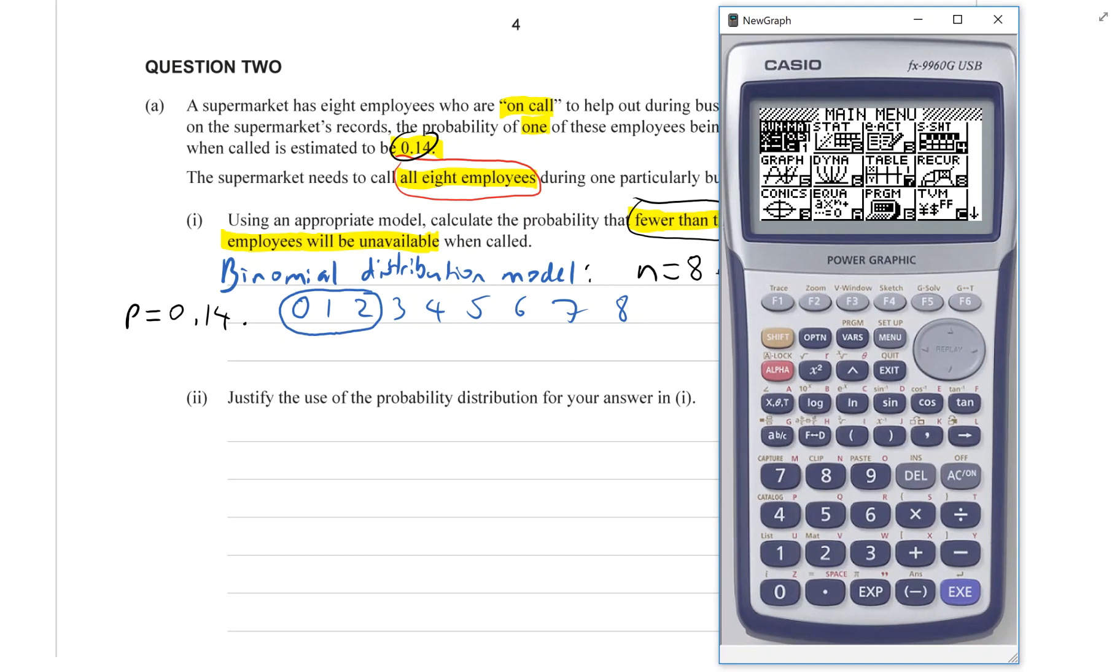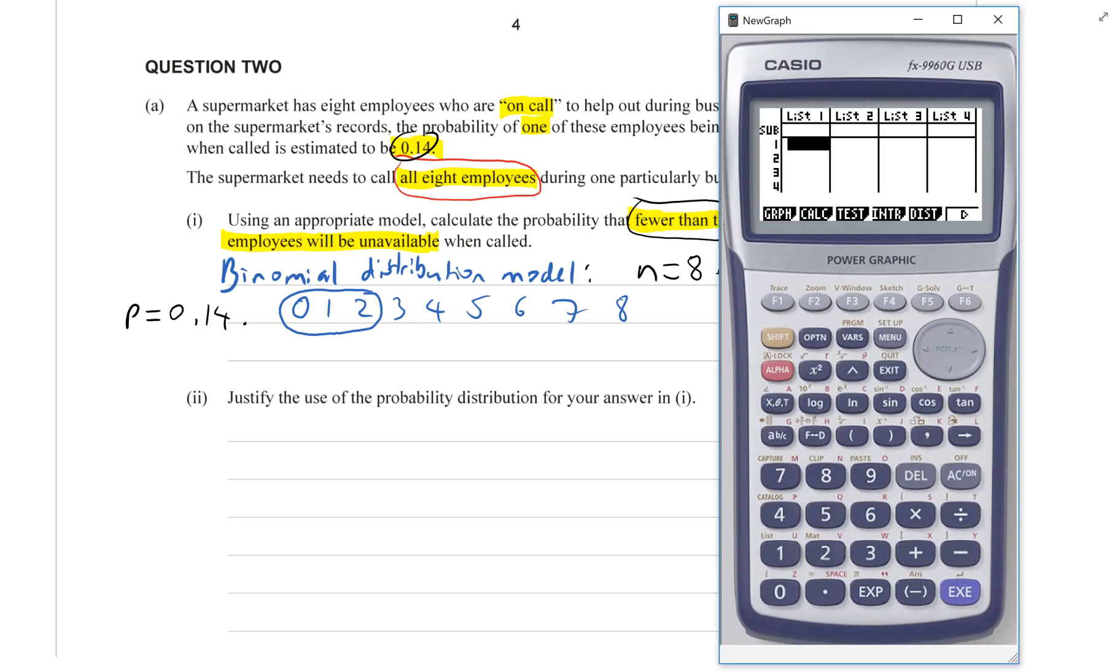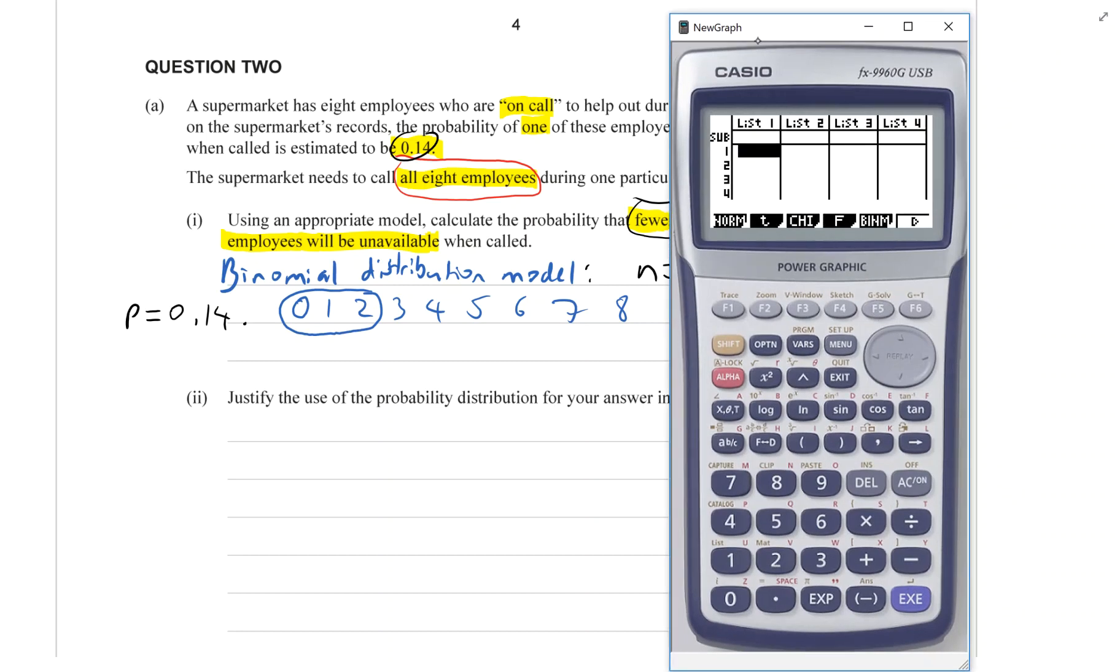Now, if you do this on a graphics calculator, and the exam is expecting you've got one of these, then we want to go menu, stat, distribution, and it's going to be binomial distribution.